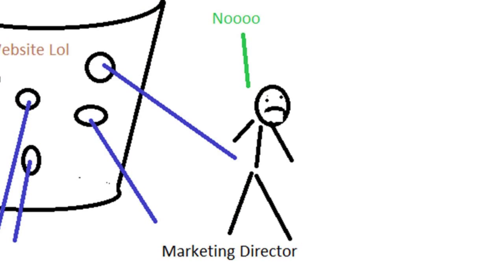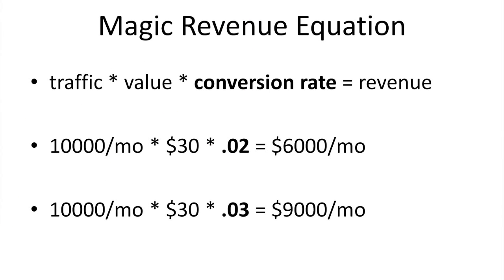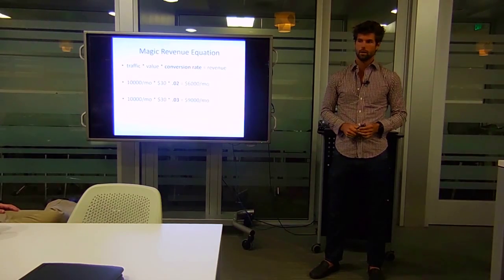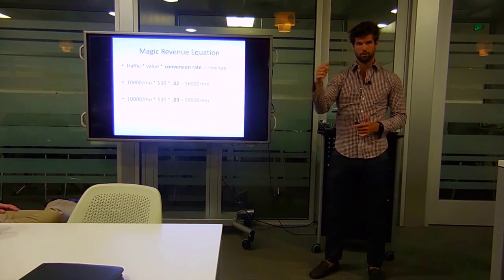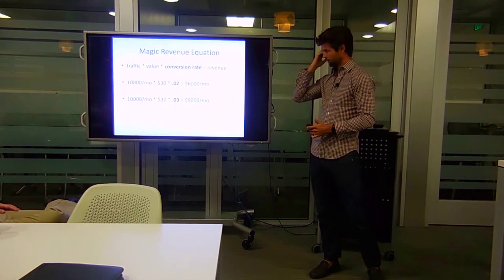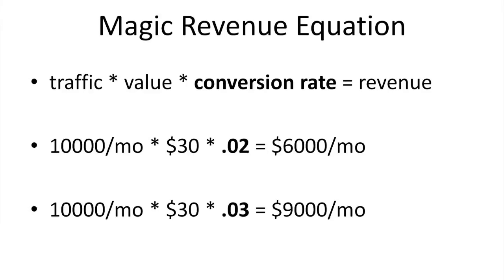Here's a basic equation to describe how a website makes money. You've got traffic, you've got value which is set by the company, and then you've got conversion rate — which is bolded because that's what I'm focusing on — and that equals revenue. If 2 out of 100 people are converting on your site, just adding one more person ups your revenue by 50%. Value is set by the company, so that's not something I'm going to deal with.